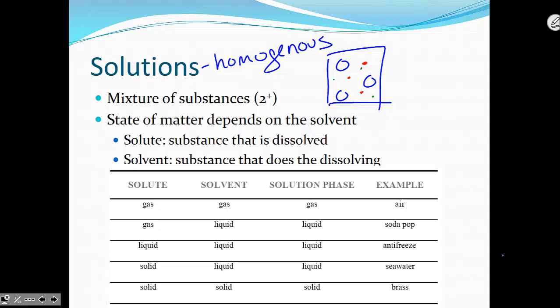Now a solution has two parts, a solute and a solvent. The solute is whatever you have less of. Solute has less letters than solvent. The solvent is whatever you have more of. The solvent dissolves the solute. You put things into your solvent.